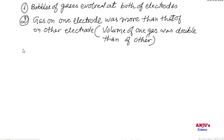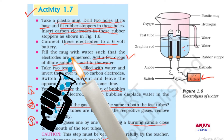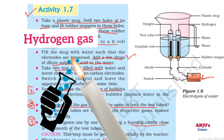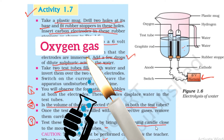Third observation: test these gases one by one by bringing a burning candle close to the mouth of the test tubes. When we bring a burning candle close to the mouth of the first test tube, a pop sound is produced. When we bring the candle close to the other test tube, the light of the candle flame increases.